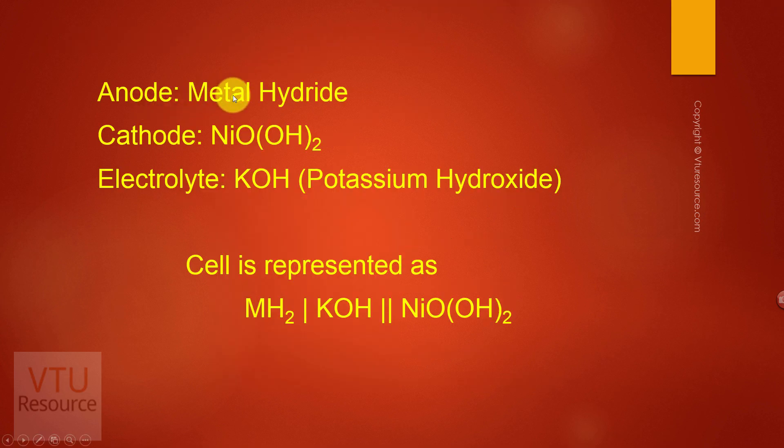The anode used in nickel-metal hydride battery is metal hydride. The cathodic active species is nickel-oxyhydroxide and the electrolyte used is potassium hydroxide.